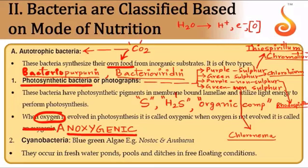Examples of photosynthetic bacteria include purple sulfur bacteria (e.g., Thiospirillum, Chromatium), green sulfur bacteria (e.g., Chlorobium), and purple non-sulfur bacteria (e.g., Rhodospirillum).